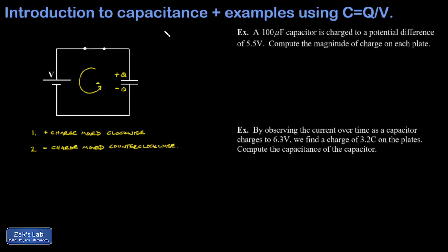So how do we measure how good a capacitor is at storing charge? That's called the capacitance. And the capacitance is the charge per unit potential difference.